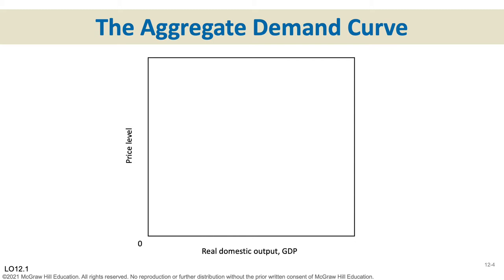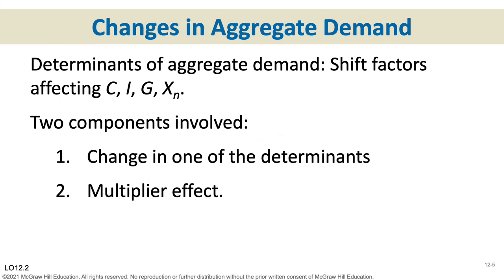Now we draw the aggregate demand curve, and we see it's downward sloping just like the single-product demand curve. But on the vertical axis we don't have the price of a single product — it's price level, like the GDP price index we calculated back in Chapter 7. And the horizontal axis is not output of a certain good; it's real domestic output — GDP — the quantity of everything we produce in the nation.